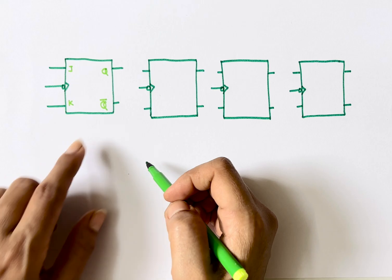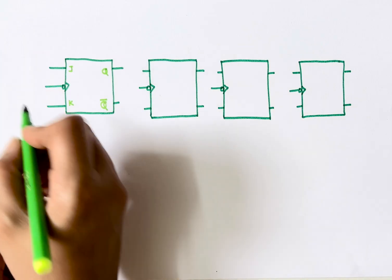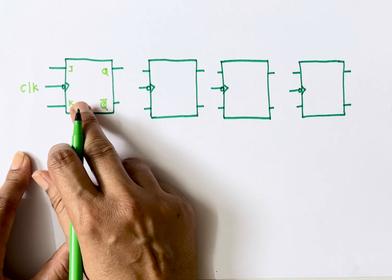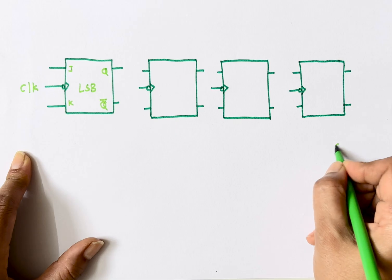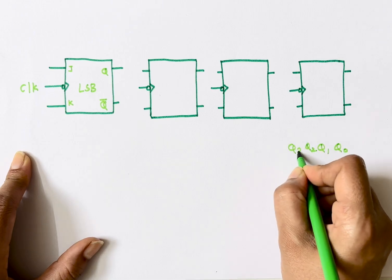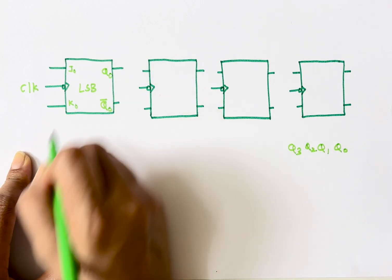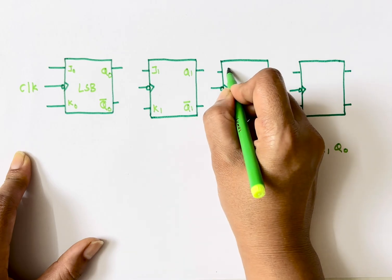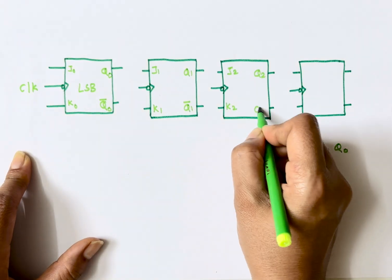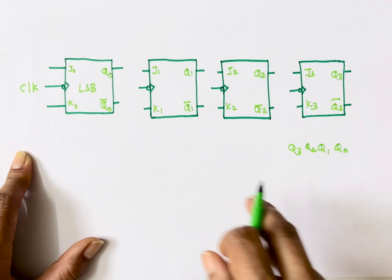Since the number of flip-flops is 4, I'll draw 4 JK flip-flops. They have inputs J and K, and outputs Q and Q-bar. The flip-flop that receives the external clock generates the least significant bit. So the outputs are labeled Q0, Q1, Q2, and Q3, with Q0 being the least significant bit.